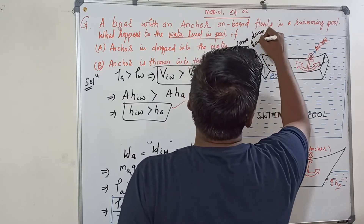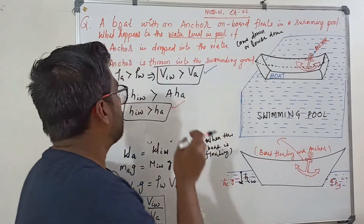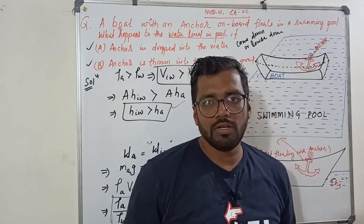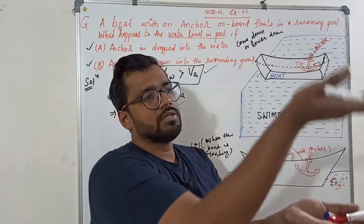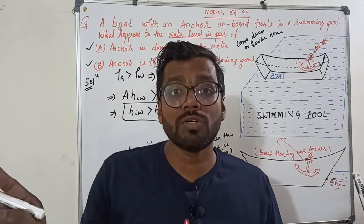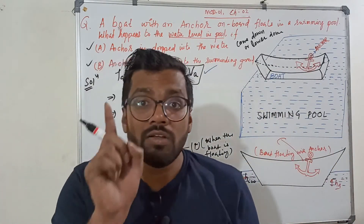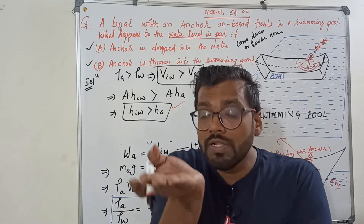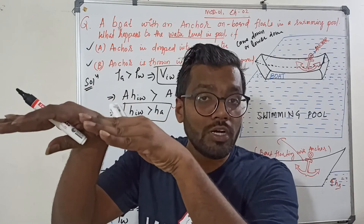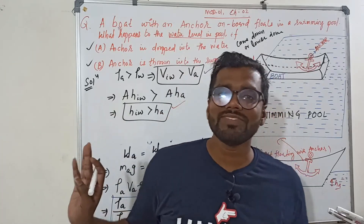In Case A, when the anchor is dropped in the pool, at least some displaced volume h_a remains. In Case B, where you throw it out on the ground, even that is removed. In both cases the water level comes down and the boat rises up. So: if they ask what happens to the boat — the boat comes up. If they ask what happens to the water level — the water level comes down.